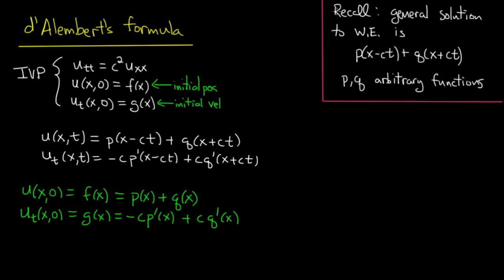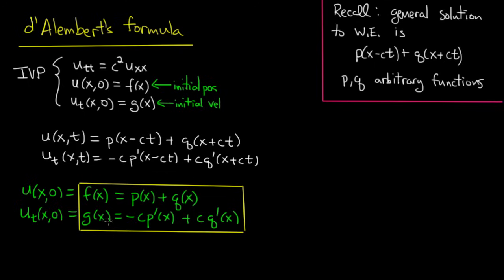Let's box off these formulas. Our goal is to find p and q in terms of f and g, and we're part of the way there. The next step will be to get rid of the primes on p and q, and the way to do that is essentially just to integrate the second equation. I'll be a little vague about it right now but will be much more clear in a moment.